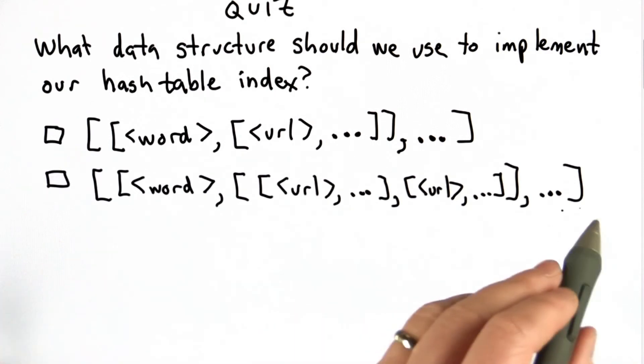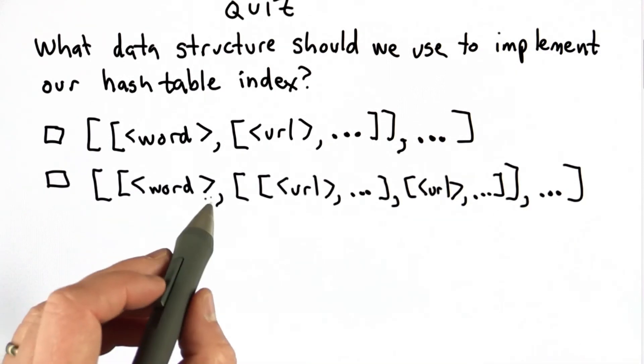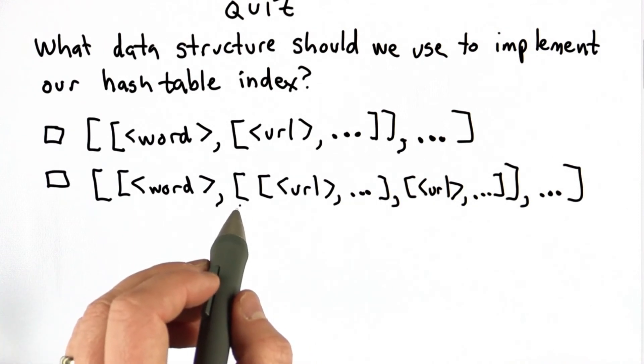The second choice is a list, where each element is a list itself, where the first element is a word, and the second element is a list of lists, where each element in that list is a list of URLs.